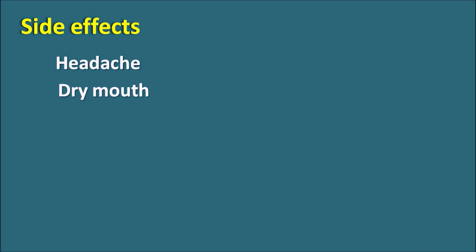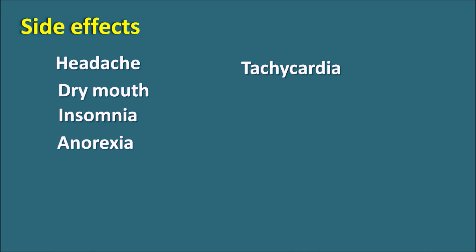The side effects of amphetamine include effects on the CNS, CVS, GI tract, renal system, and other organs. Important side effects include headache, dry mouth, tachycardia, and insomnia — lack of sleep — which is also why this drug can treat narcolepsy. Anorexia (loss of appetite) is another important effect, and was previously the basis for use as an appetite suppressant, causing weight loss. Palpitations can be observed due to cardiovascular activation.